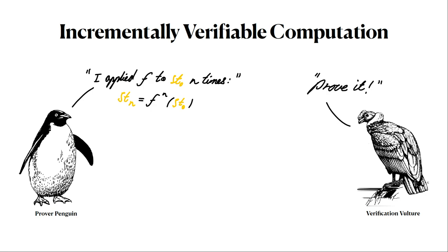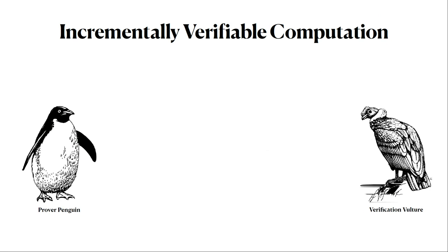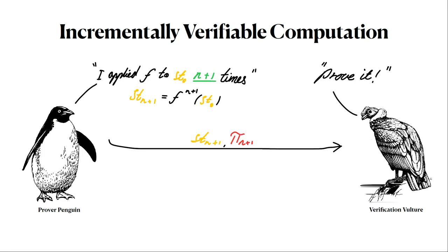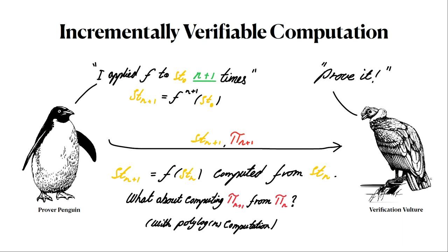The vulture is questioning this proposition. Luckily we have this great literature of computational integrity proofs, so the prover penguin could send over the state, the claimed state, and then some sort of integrity proofs that this was computed correctly. Now a few seconds later the prover wants to prove something slightly different. He wants to prove that he now applied the function n plus 1 times. The verifier still requires proof of this. Again, he can compute a proof and send over the resulting state.